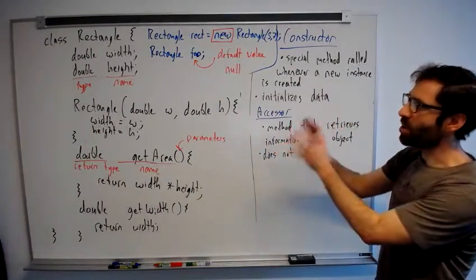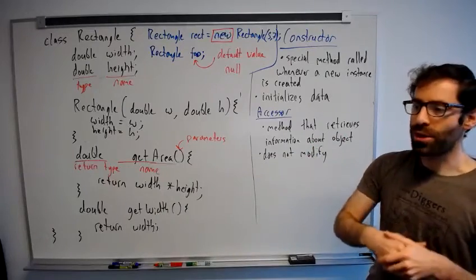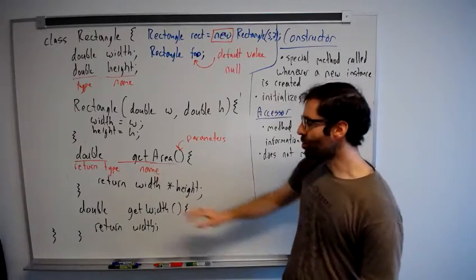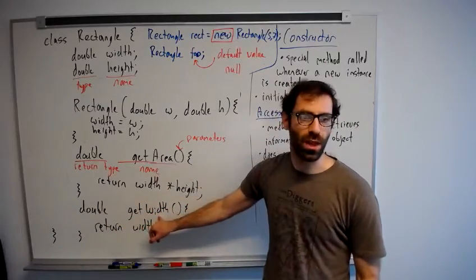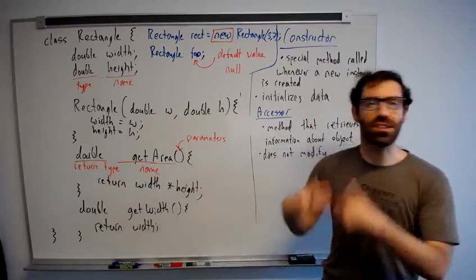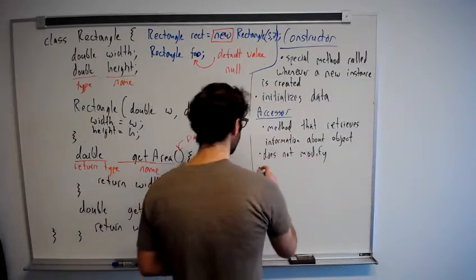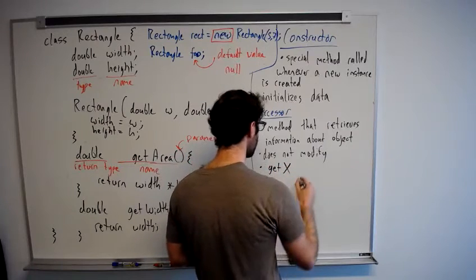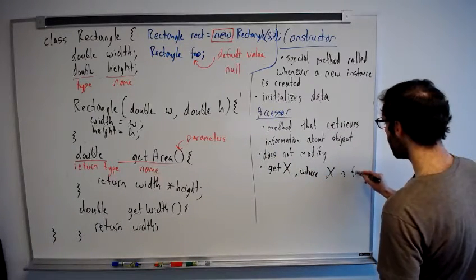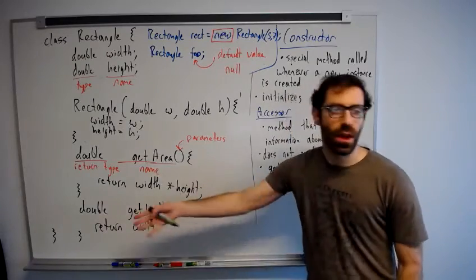And this always interacting with objects through methods enables a level of abstraction where the object can change what data it is actually using, as long as code using that class can still use it even though the underlying implementation has changed. And so these accessor methods are usually named get X, where X is one of the fields of the object. So we had get width and get height.